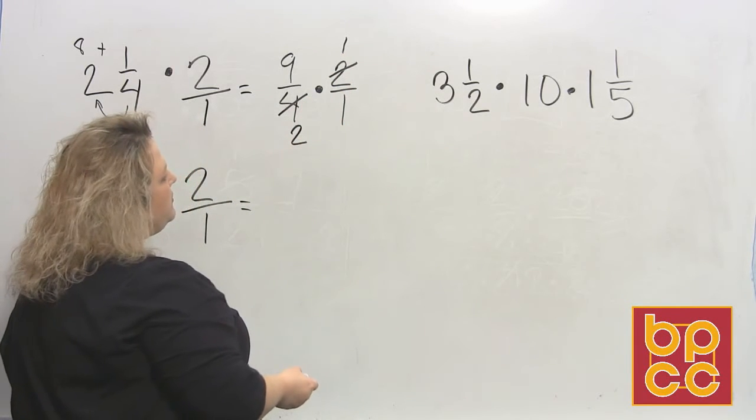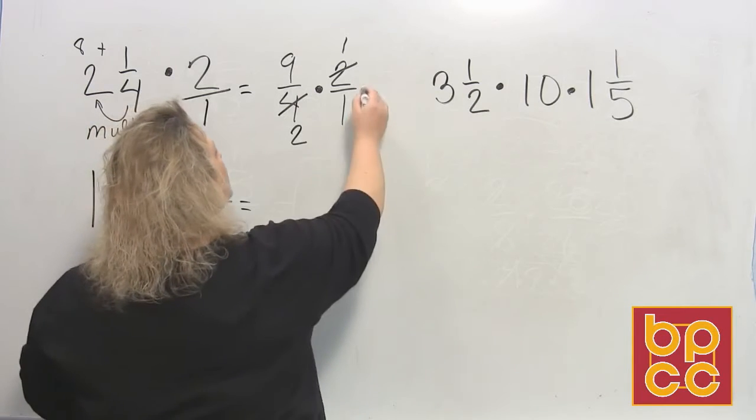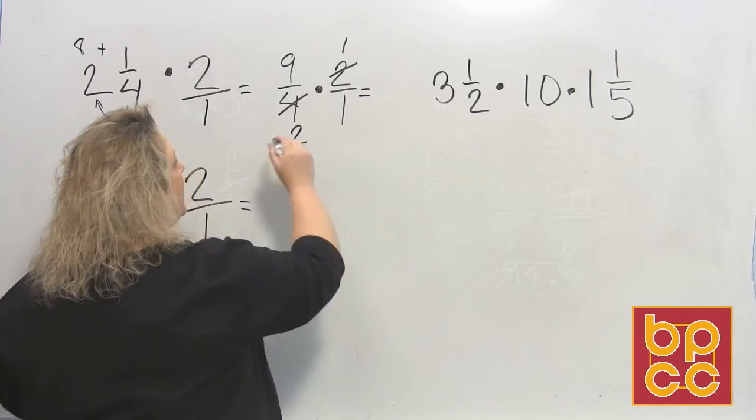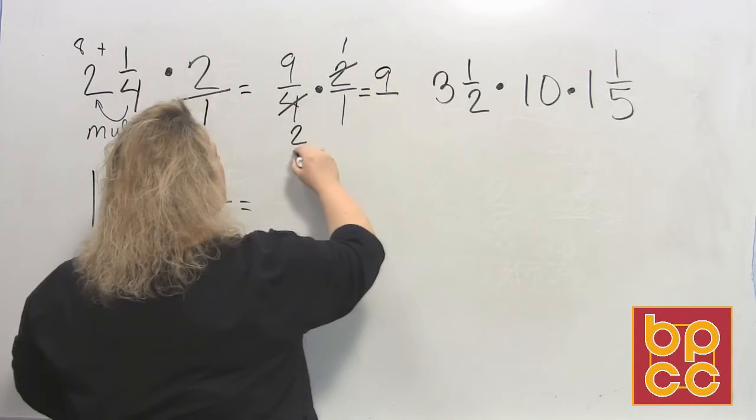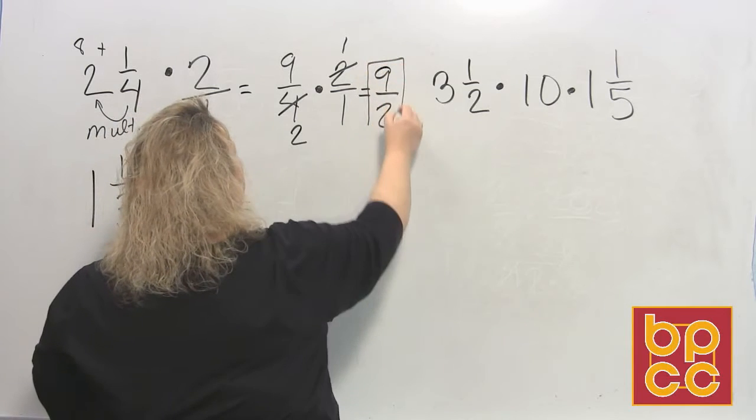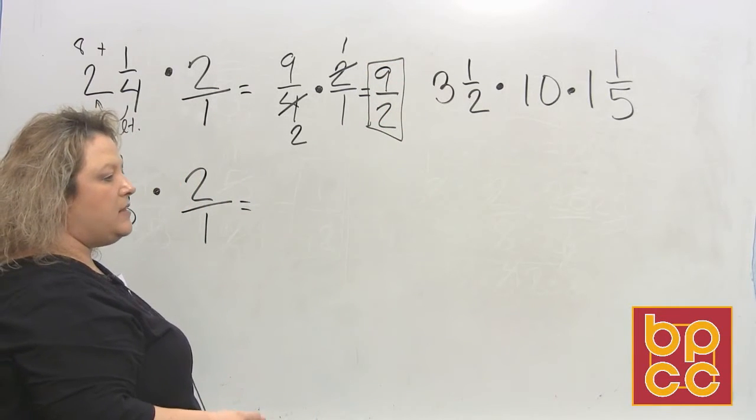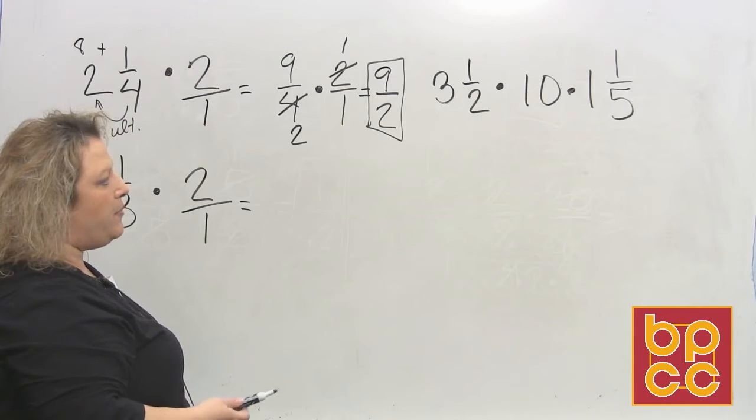Once you've done all your reducing, then you multiply top times top and bottom times bottom. So when I multiply top times top, I get 9 times 1 is 9, and then 2 times 1 is 2. Now, that gives me 9/2. And if I was just going to have this as fractions or improper, that would be great.